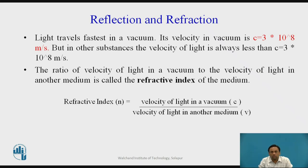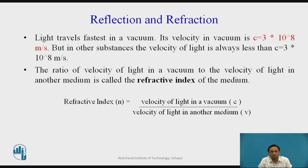To calculate the refractive index, it is the ratio of the velocity of light in a vacuum (C) to the velocity of light in another medium (V). The refractive index for air is 1. Since water is denser than air, its refractive index is 1.33. A denser medium will have a higher refractive index.